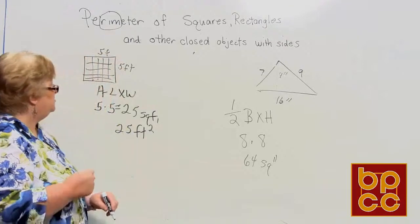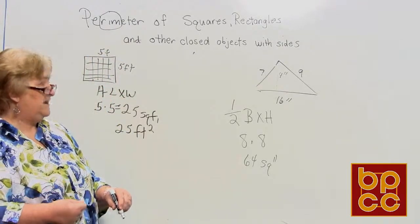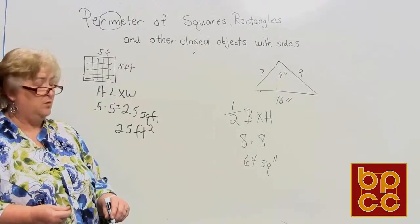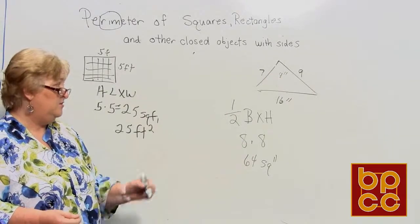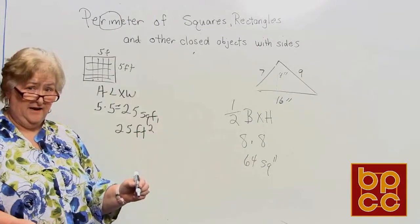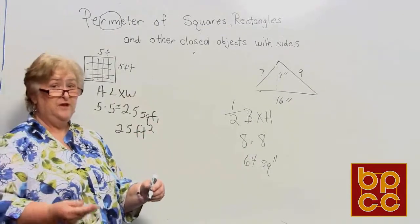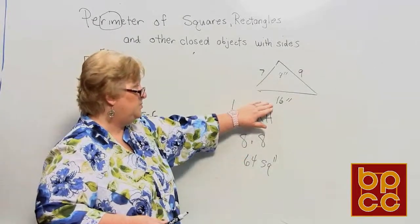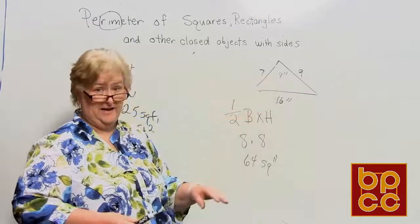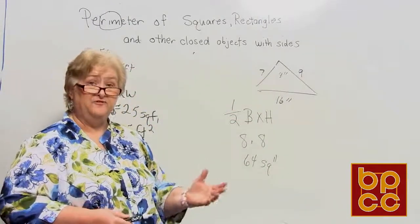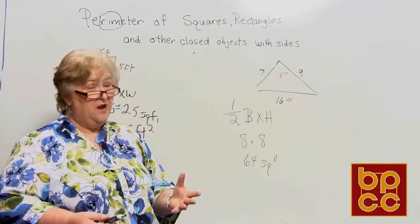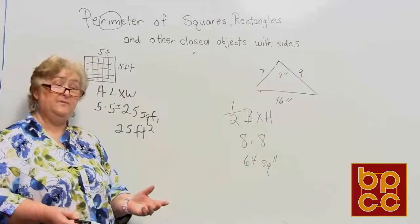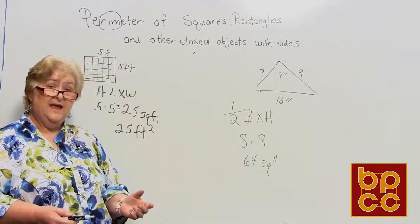To summarize: area of a square or rectangle is length times width — make sure to label square feet, square inches, or whatever unit you're using. For a triangle, it's one-half times base times height. Some people multiply base times height first and then divide by two — that works too, but if you skip the halving step you'll end up with the area of a square or rectangle, so be careful.